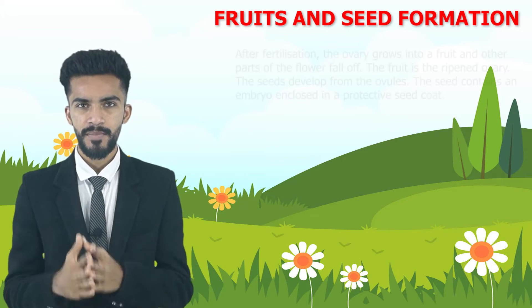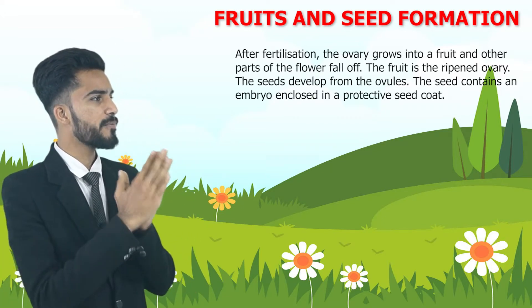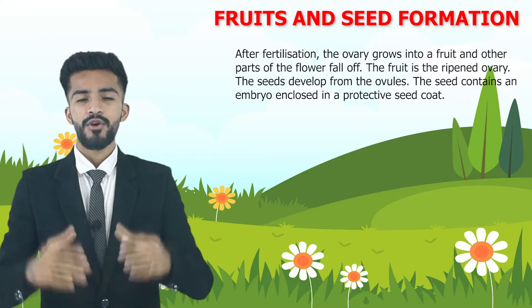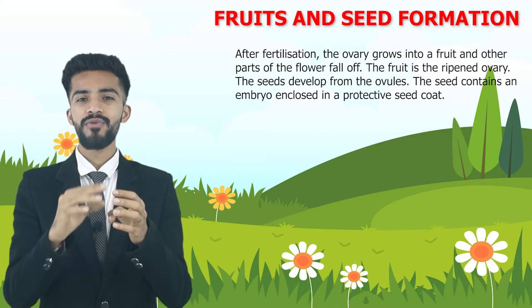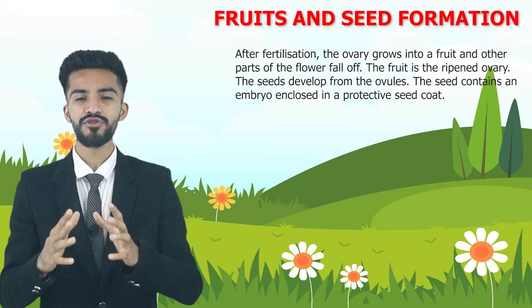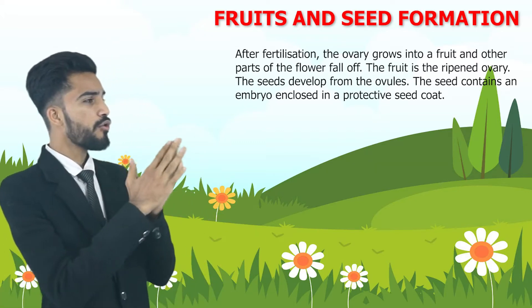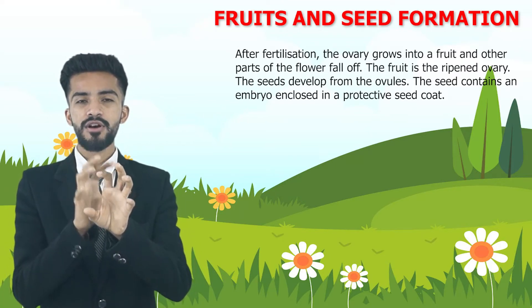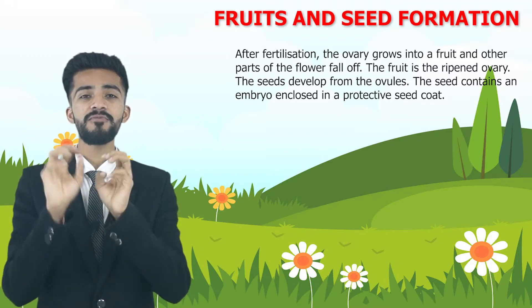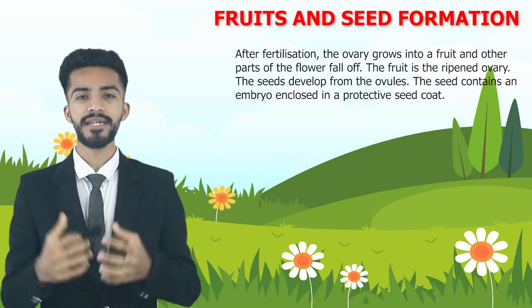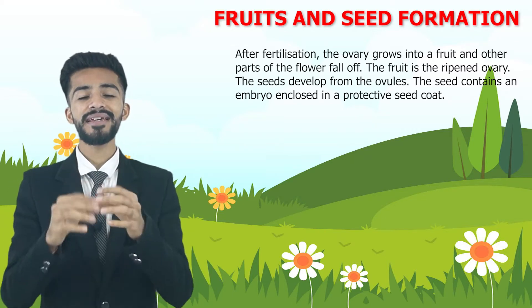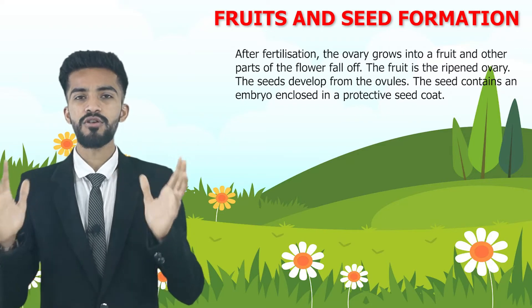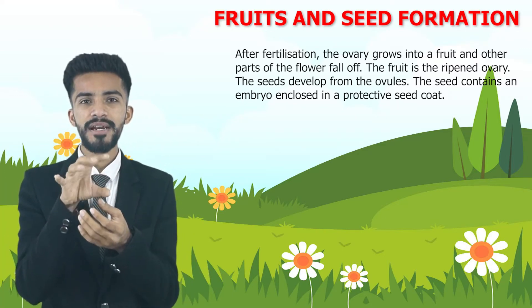So let's see: after fertilization, the ovary grows into a fruit, and other parts of the flower fall off. What is written here is that after fertilization, when the process of fertilization is completed, the ovary grows into a fruit. We already know that first the zygote forms, and after the formation of the zygote it becomes an ovary, and that ovary converts into a fruit. It grows into a fruit.